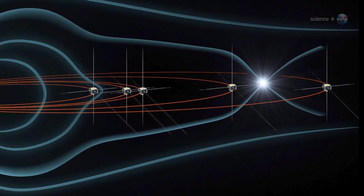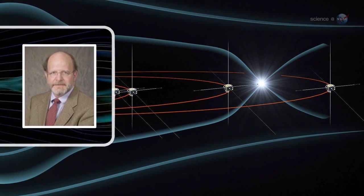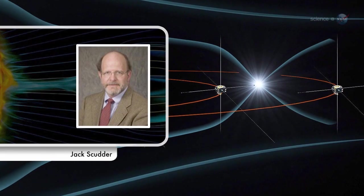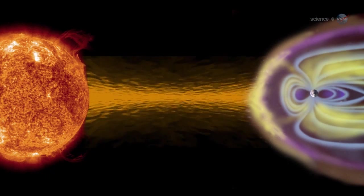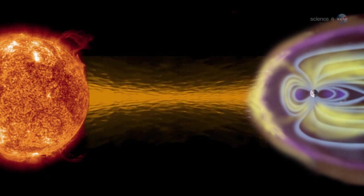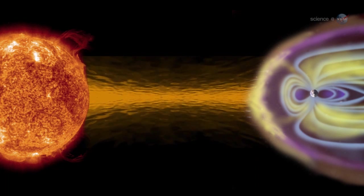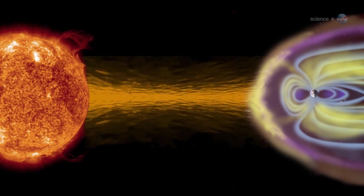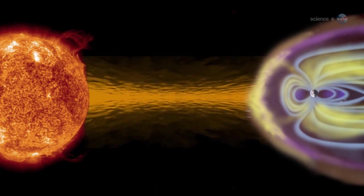We call them X-points, or electron diffusion regions, explains plasma physicist Jack Scudder of the University of Iowa. They're places where the magnetic field of Earth connects to the magnetic field of the Sun, creating an uninterrupted path leading from our own planet to the Sun's atmosphere 93 million miles away.